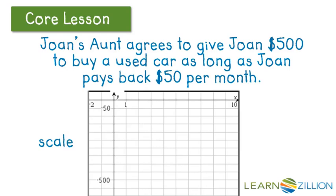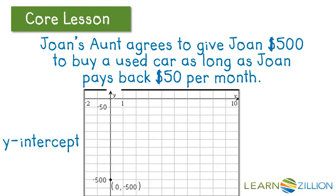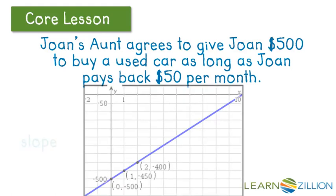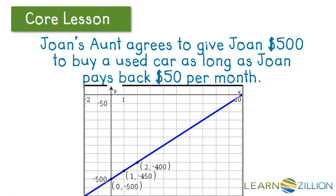We're also going to build a graph. We find the scale to fit it all in the graph, then find the y-intercept first. The way that's going to help build the graph is if you can identify one point you know is going to be on the graph. At zero months, the value is negative 500 — so let's locate that point first, then locate points built off of that. After one month, she should have paid back $50, so that point is one month, negative 450. Then negative 400 for another month. As long as we have a few points, we can make our graph and show the relationship in picture form.